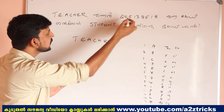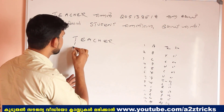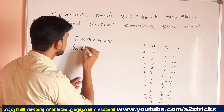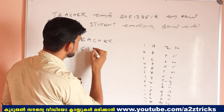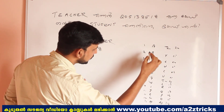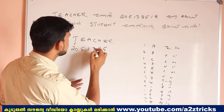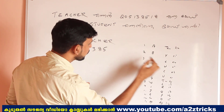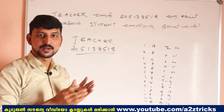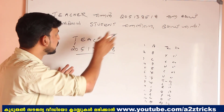Teacher. Let's see how the teacher is coded. T is, E is 5, A is, C is, H is, E is 5, R is 18. Let's see how the teacher is.